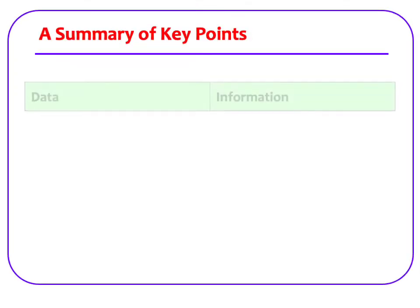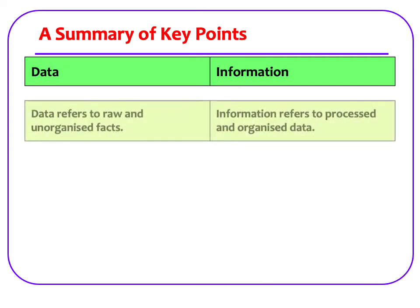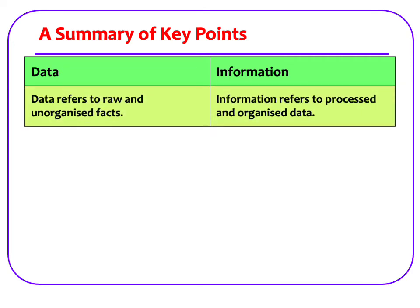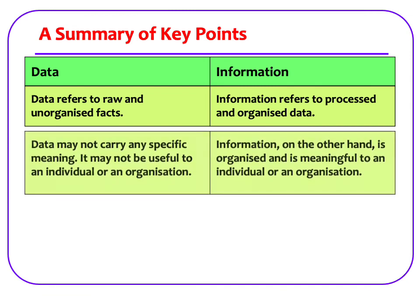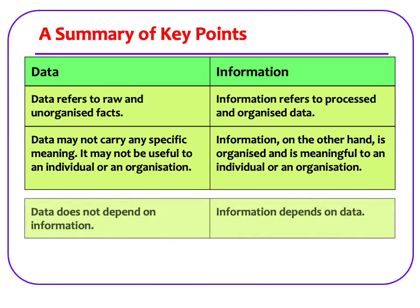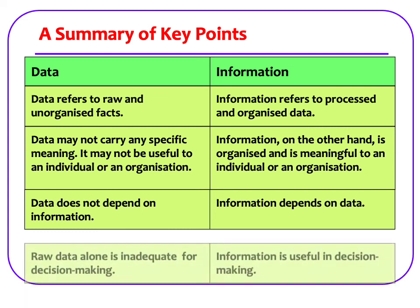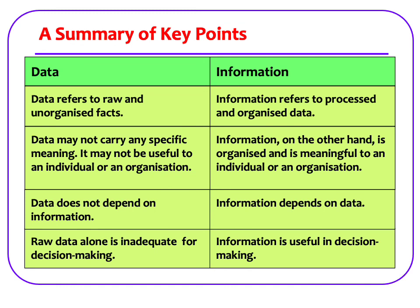Here is a summary of key points. What is the difference between data and information? Data refers to raw and unorganized facts. Information refers to processed and organized data. Data may not carry any specific meaning and may not be useful to an individual or an organization. Information, on the other hand, is organized and it is meaningful to an individual or an organization. Data does not depend on information; information depends on data. Raw data is inadequate for decision-making. Information is useful in decision-making.